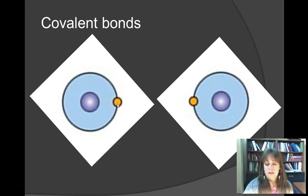These atoms are not stable because they only have one electron in the first valence shell. It needs to either have zero or two. They need to be completely full, completely empty.